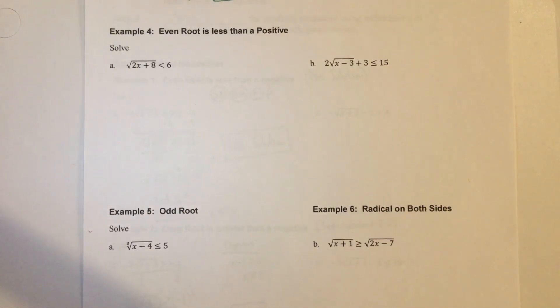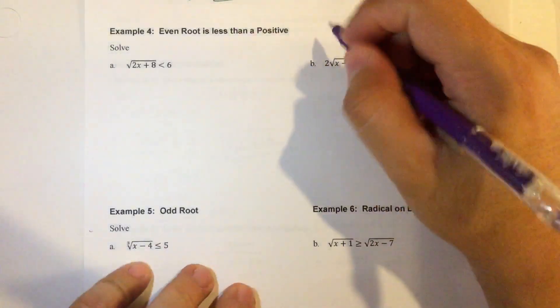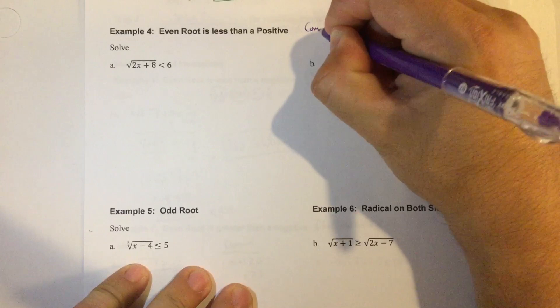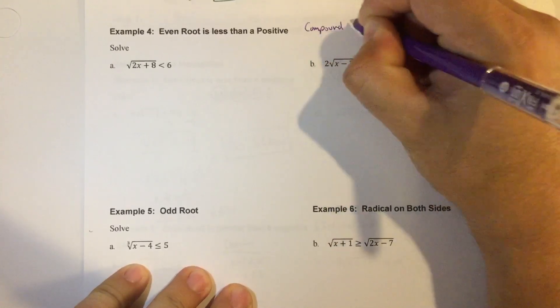All right, the next example is an even root is less than a positive number. So what's going to happen here is when you have an even root and it's less than a positive number, you're going to get a compound inequality.